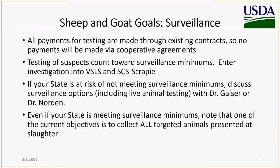For sheep and goat surveillance, all payments for testing are made through existing contracts. No payments need to be made through the cooperative agreements, and you won't get money to pay for any testing because USDA is already paying for those tests. Note that testing of suspect animals — scrapie suspect animals — will count towards your surveillance minimums. We ask that you enter your investigation into the Veterinary Services Laboratory Submission System and into our database, the SCS Scrapie Database.